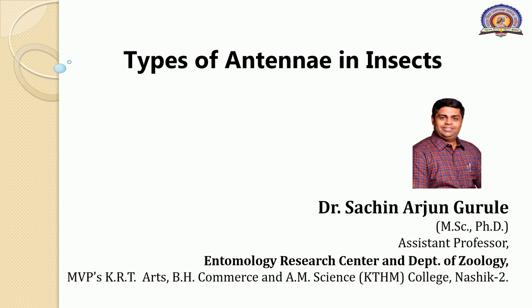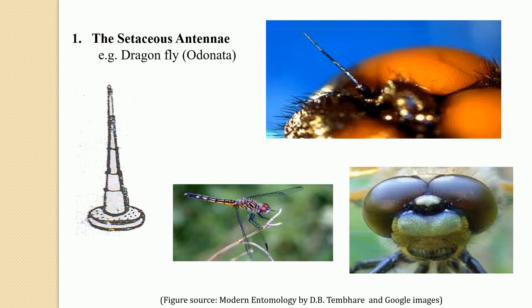In this video we are going to learn the types of antennae in insects. The antennae are highly modified in different groups of insects and they possess a taxonomic and sexual dimorphic significance in some insects, particularly among the Coleoptera and the Diptera. The taxonomic significance means that according to the kind of antennae present and the nature of the different segments contributing the antennae, insects are sometimes classified into different taxa.